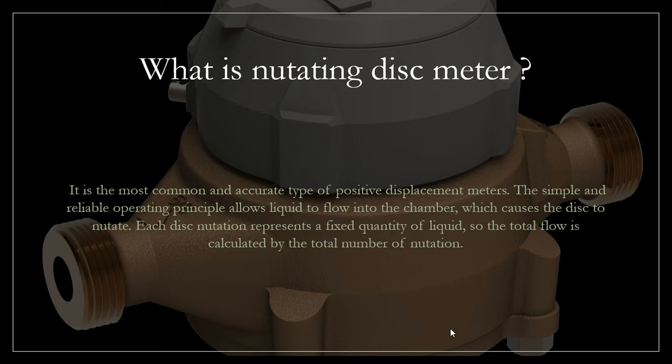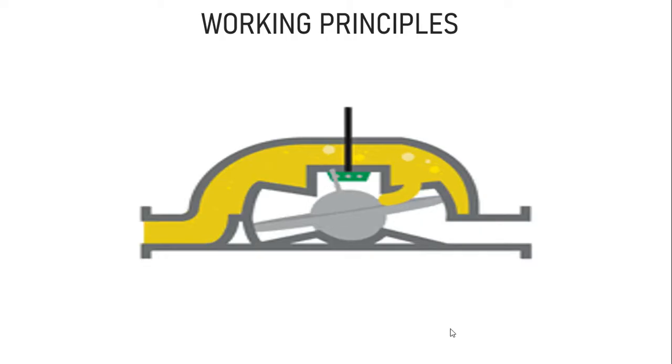This means they operate by having a disc mounted to a central ball. When fluid enters the chamber, each disc nutation represents a fixed quantity of liquid, so the total flow is calculated by the total number of nutations.